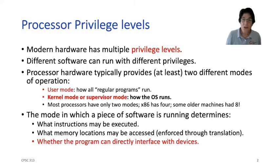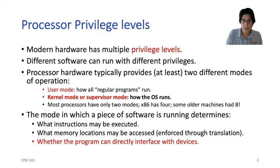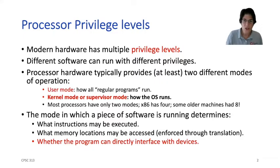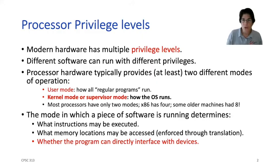Let's begin by talking about processor privilege levels. Every processor has at least two different privilege levels, usually called user and supervisor mode. These privilege levels enable programs running at those levels to actually execute different instructions. Different software runs with different privilege levels. In particular, what we think of as applications — the programs you write — run in what's called user mode.